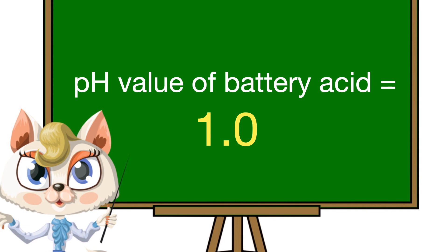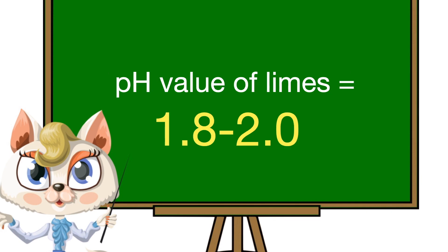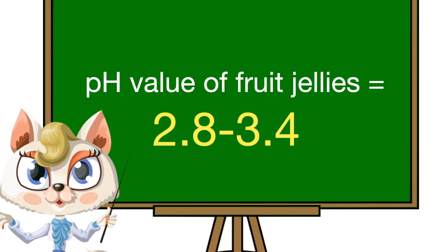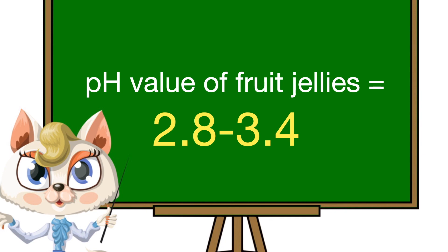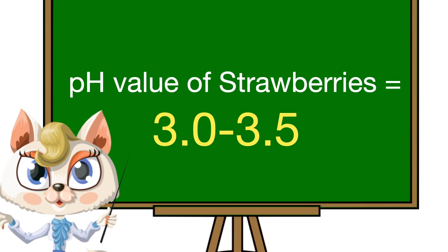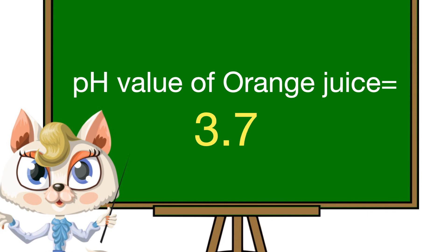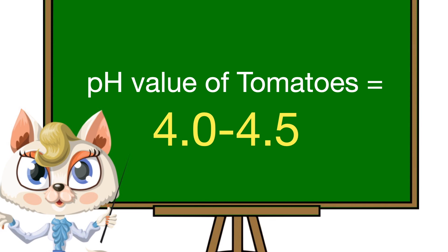The pH value of battery acid is 1.0. The pH value of limes is 1.8 to 2.0. The pH value of fruit jellies is 2.8 to 3.4. The pH value of apple juice is 2.9 to 3.3. The pH value of strawberries is 3.0 to 3.5.